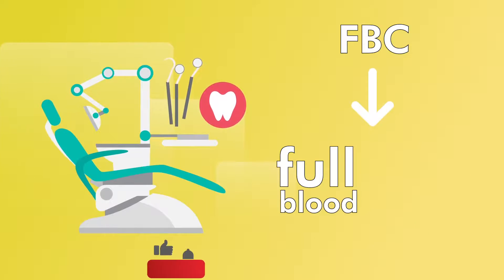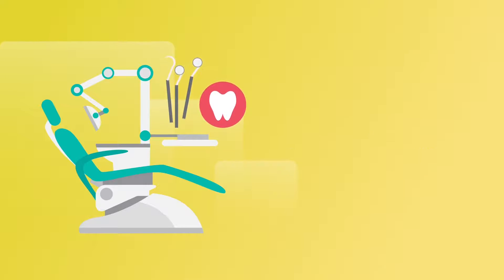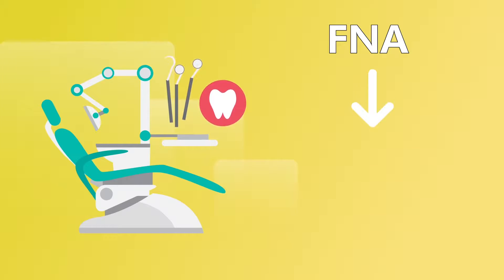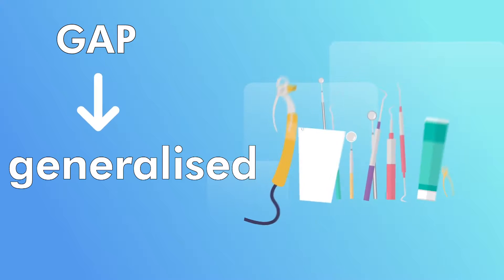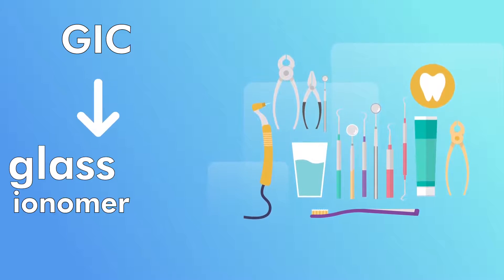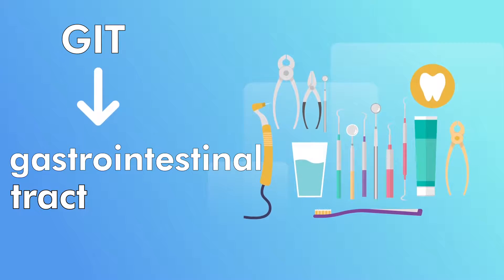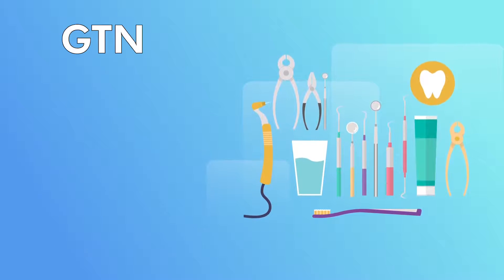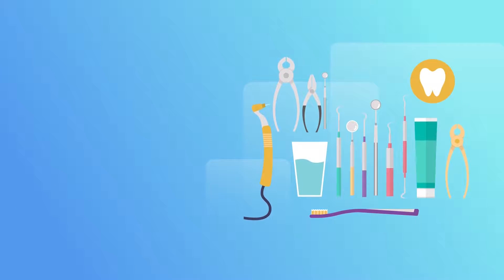FBC, full blood count. FMPA, Frankfurt mandibular plane angle. FGDP, faculty of general dental practitioners. FH, family history. FNAB, fine needle aspiration biopsy. FNAC, fine needle aspiration cytology. FYI, for your information. GA, general anesthetic. GAP, generalized aggressive periodontitis. GDC, general dental council. GIC, glass ionomer cement. GIT, gastrointestinal tract. GMP, general medical practitioner. GDP, general dental practitioner. GTN, glyceryl trinitrate. GMH, general medical history. GTR, guided tissue regeneration.